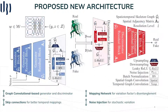To address those limitations, we leverage the benefits of generative adversarial networks with a graph convolutional base generator and discriminator to better represent human skeletons, where we highlight temporal skip connections for better temporal mappings and training stability. The application of a mapping network on the generator better disentangles the variation factors on the latent space, and the use of noise injection as a second input to the generator facilitates the generation of variation. This architecture can be easily extended to a conditional model to generate desired actions.